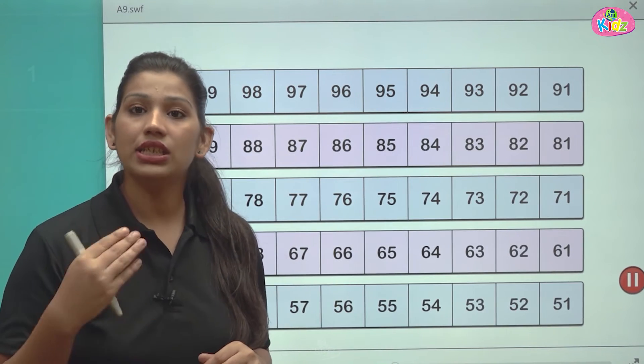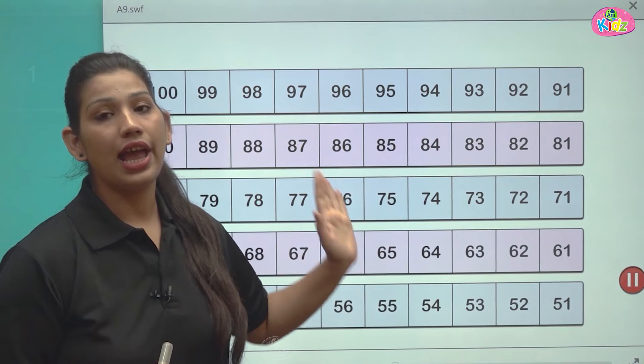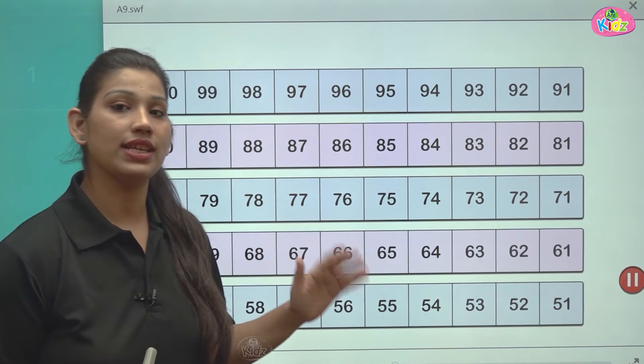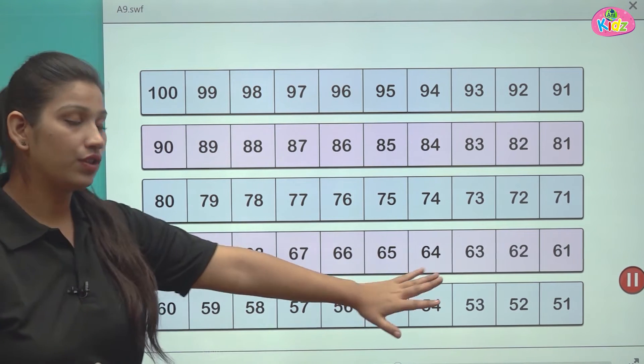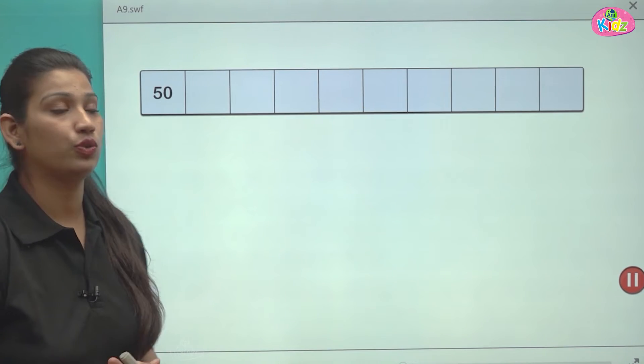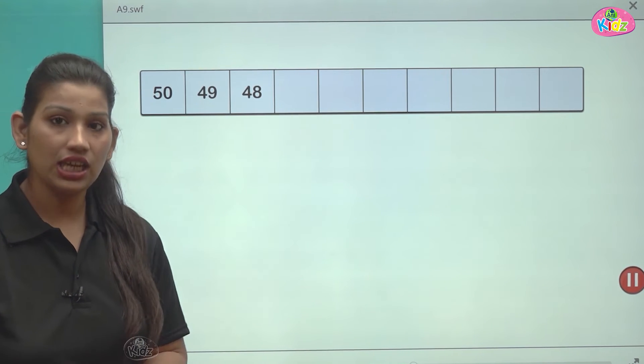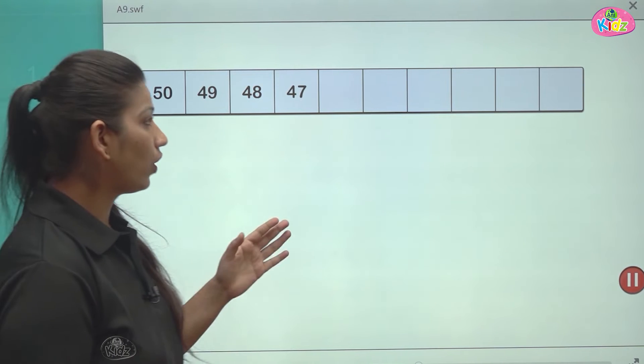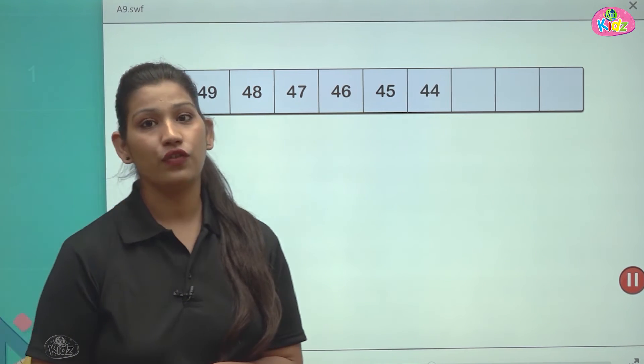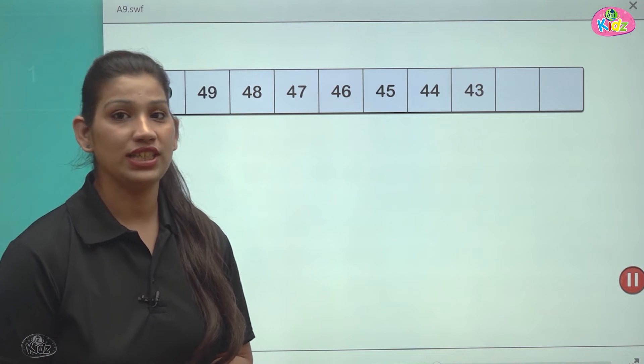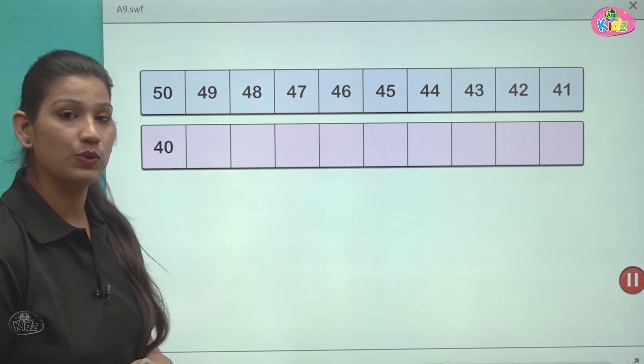We have to write the number in the decreasing order in backward counting as we move towards 50, which is 50, 49, 48, 47, 46, 45, 44, 43, 42 and 41. This is number 41.